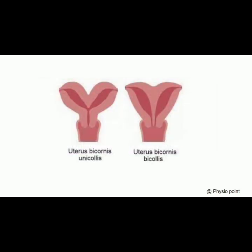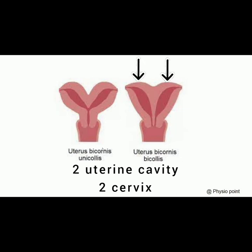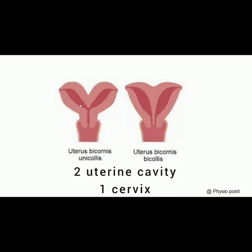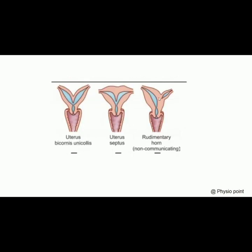This complete bicornuate uterus is again of two types: uterus bicornis unicollis and uterus bicornis bicollis. Uterus bicornis bicollis means there are two uterine cavities with two cervices, and there may or may not be a vaginal septum. Uterus bicornis unicollis means there are two uterine cavities with a single cervix, and the two cavities may be equal or, as shown in the picture, one may be rudimentary and not communicating with the developed one.